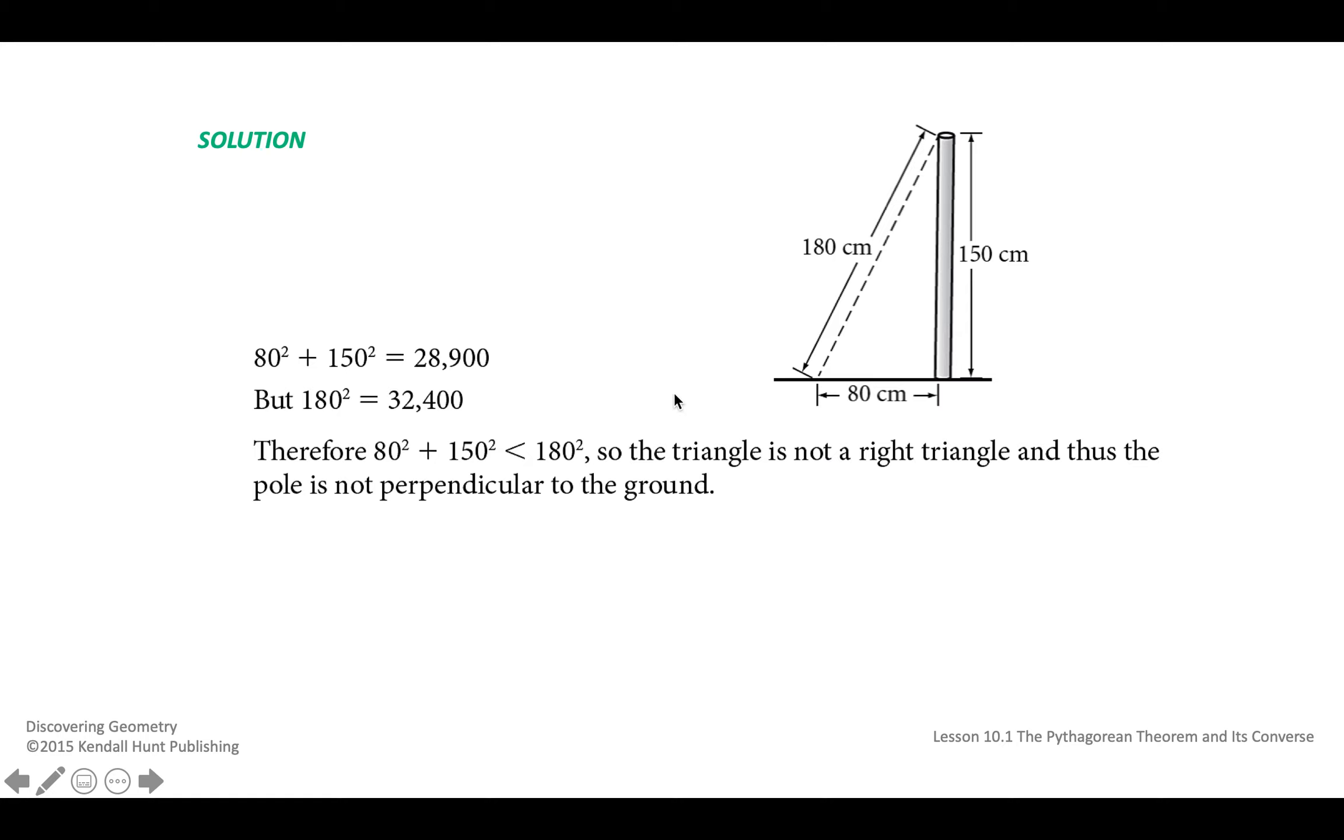So they plug things in to see if it's true. They plug in 80 as one of the legs, 150 as one of the legs, and then this longest side, 180, is the hypotenuse. But it looks like 80 squared plus 150 squared is equal to 28,900. But when you square 180, you get 32,400. So it looks like A squared plus B squared is less than C squared, so the triangle is not a right triangle, and we know the pole is not perpendicular to the ground. So that one was using the converse of the Pythagorean theorem to determine whether or not a triangle was a right triangle.